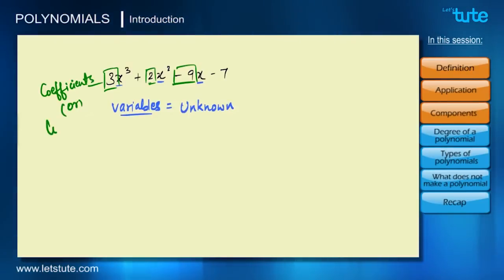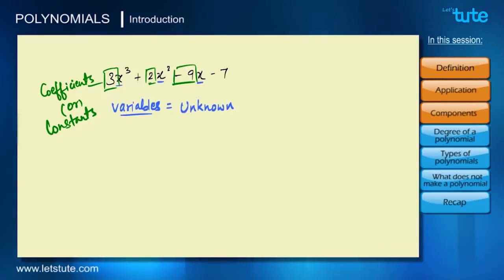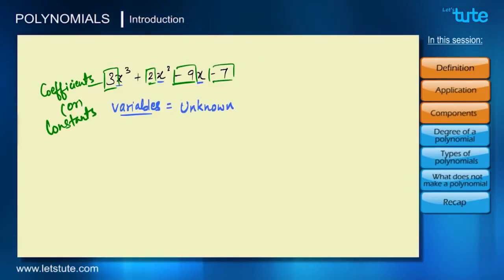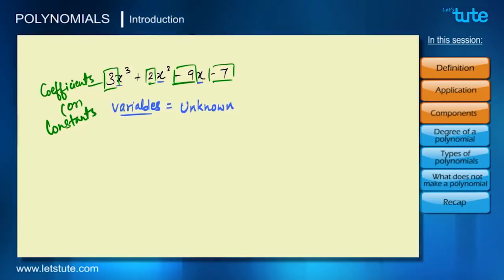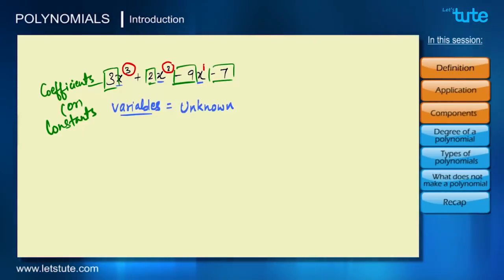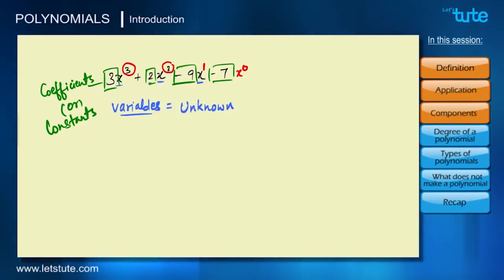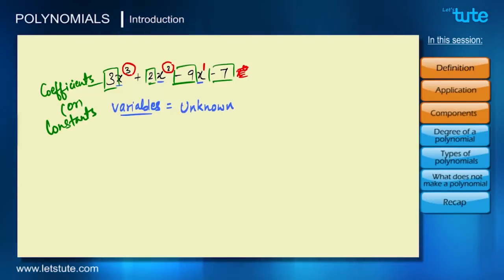The numbers right in front of the variables are called coefficients, also known as constants because they have a particular value. In our example, these are +3, +2, −9, and −7. The third component is the numbers written in superscript above the variables — like 3, 2, 1 — and even x raised to the power 0, which equals 1 and is usually not written.